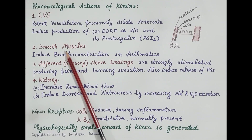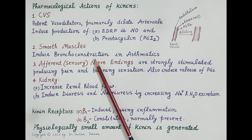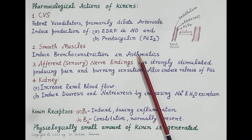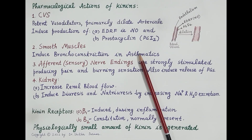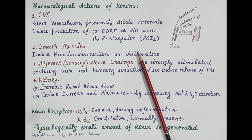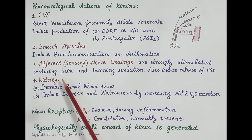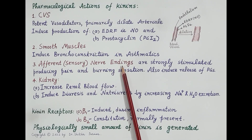The second effect is on smooth muscles. Kinins contract smooth muscle cells of the bronchial tract, inducing bronchoconstriction in asthmatic patients and leading to difficulty in breathing. Due to bronchoconstriction, the airway becomes very narrow, causing difficulty in the passage of air in and out of the lungs, so the patient is unable to breathe properly.